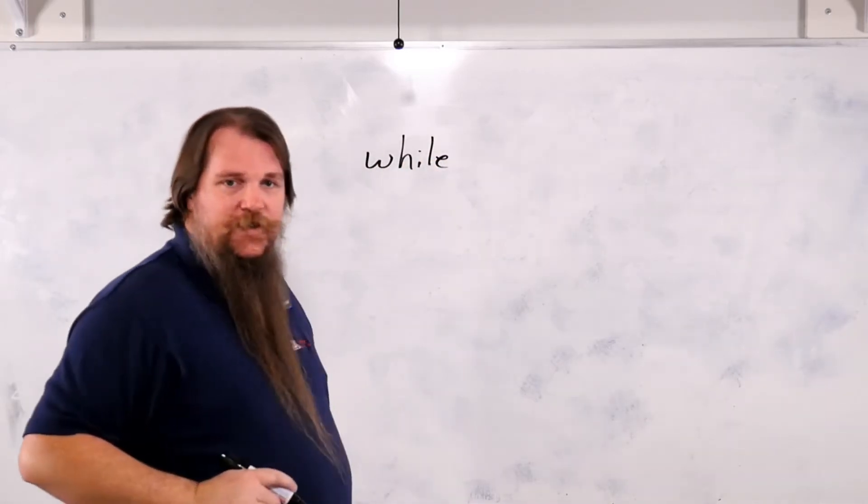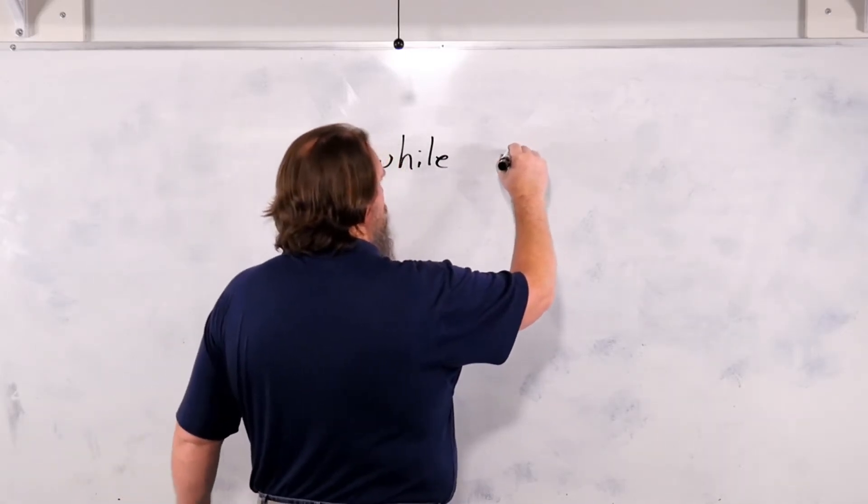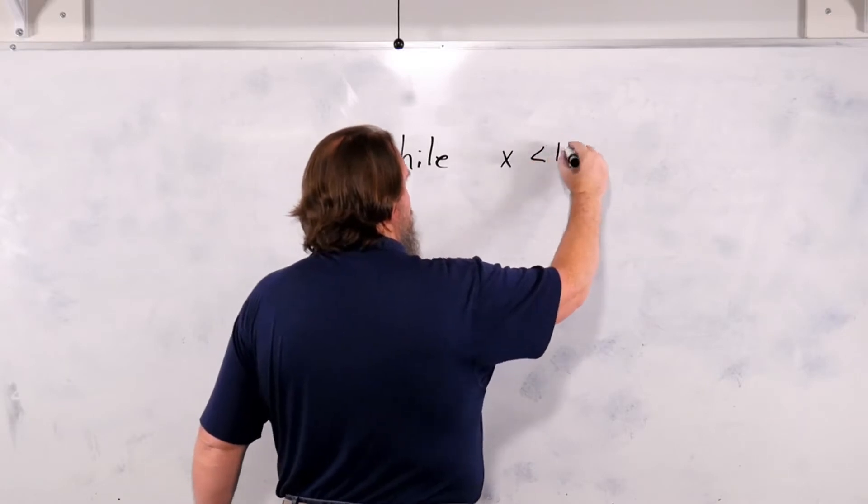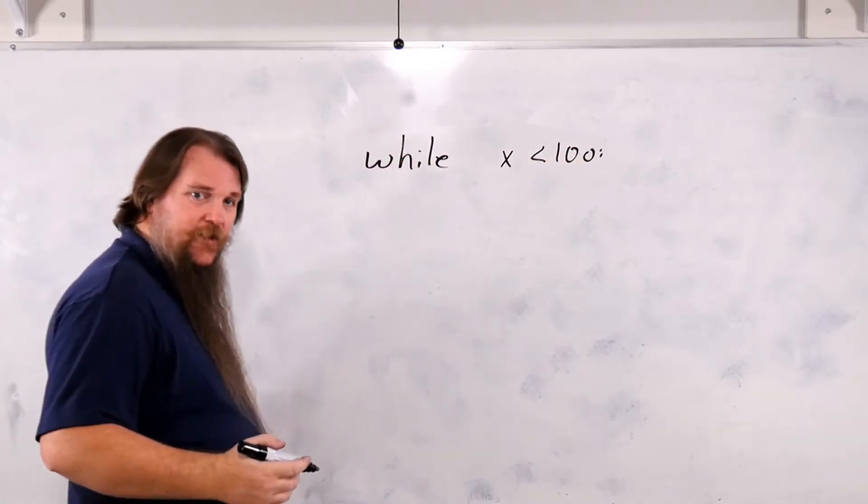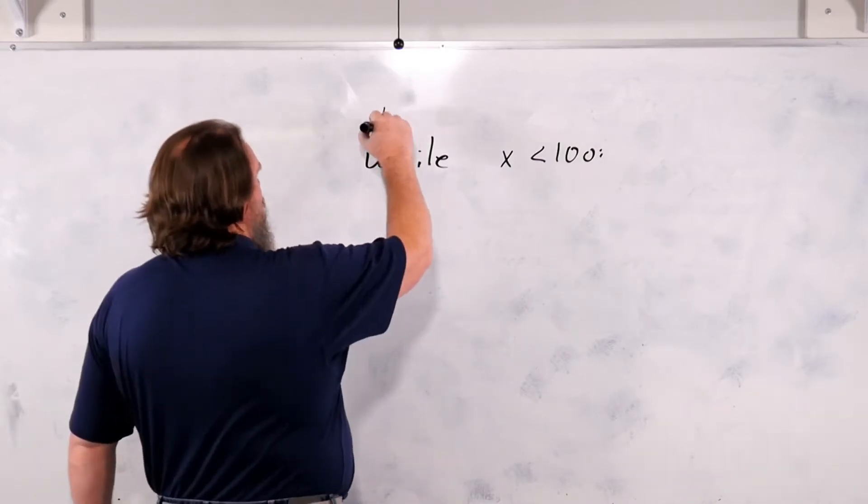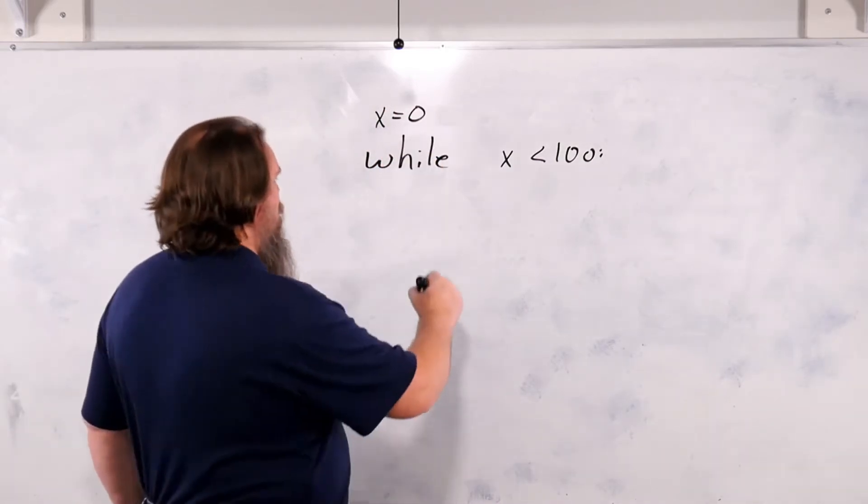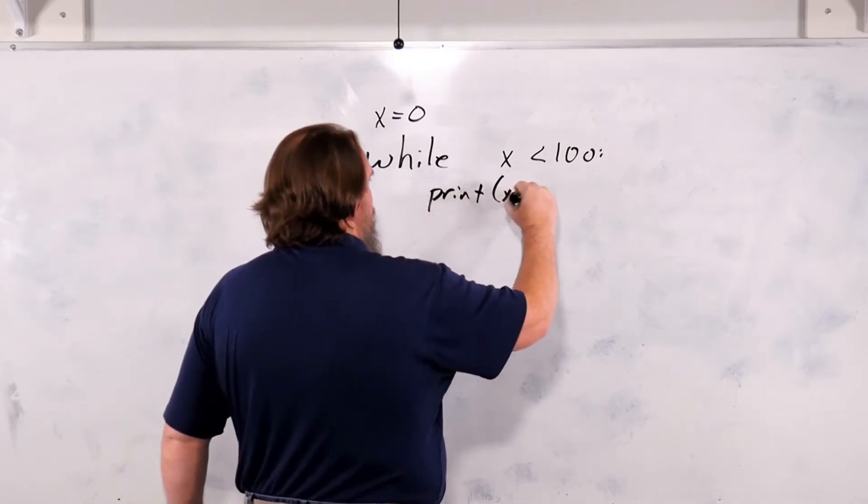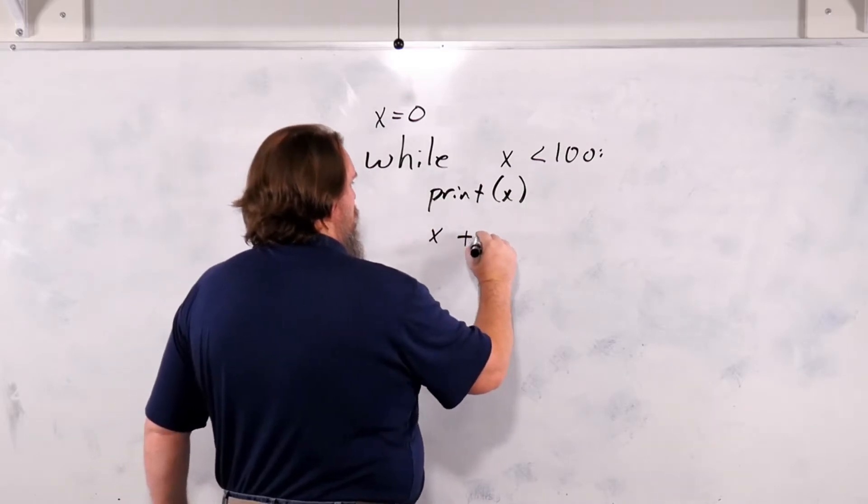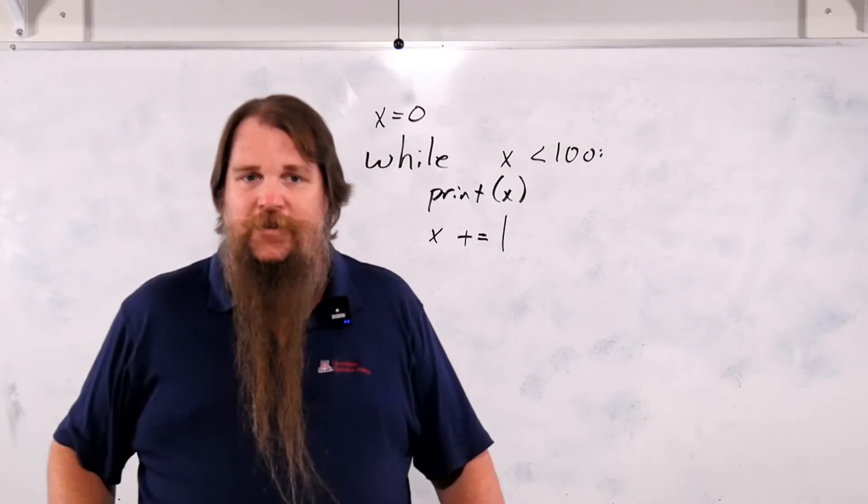In Python, a while loop is simply the word while, and then a condition. So we'll say while x is less than 100, let's replicate the loop over integers. x equals 0, x less than 100, print x, x plus equals 1, and that's your while loop.